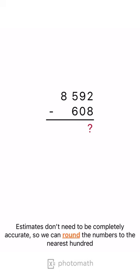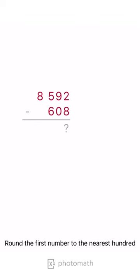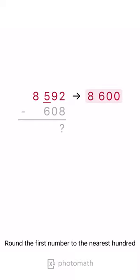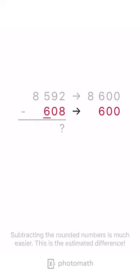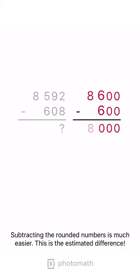Estimates don't need to be completely accurate, so we can round the numbers to the nearest hundred. Round the first number to the nearest hundred. Round the second number to the nearest hundred. Subtracting the rounded numbers is much easier. This is the estimated difference.